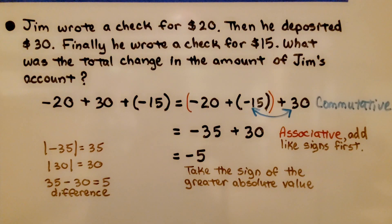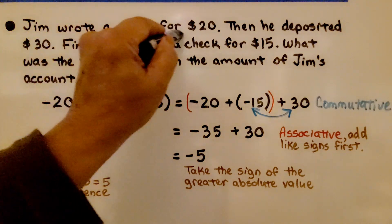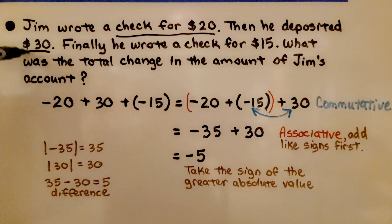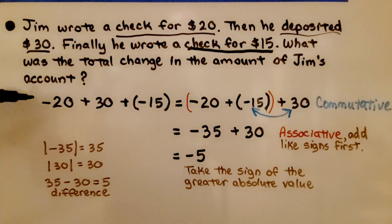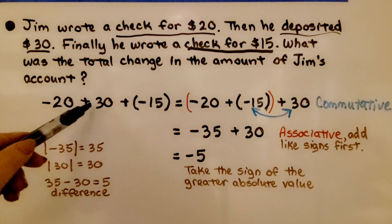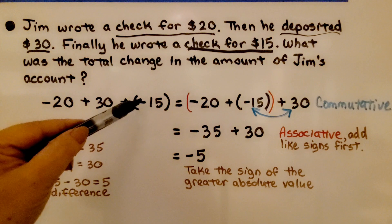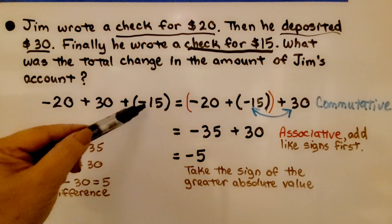Let's try one last example. Jim wrote a check for $20, then he deposited $30, and finally he wrote a check for $15. What was the total change in the amount of Jim's account? He wrote a check for $20 — that's negative 20. He deposited $30 — that's positive 30. Then he wrote a check for $15 — that's adding negative 15. Our expression is negative 20 plus 30 plus negative 15.